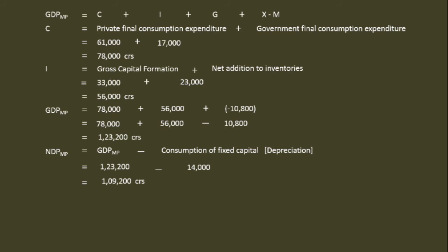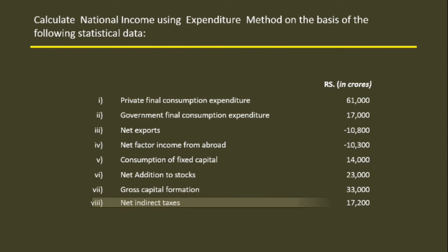The third step is estimation of Net Domestic Product at Factor Cost. Net Domestic Product at Factor Cost equals Net Domestic Product at Market Price minus Net Indirect Tax. Net Domestic Product at Market Price is already calculated as 1,09,200 crores, and Net Indirect Tax is 17,200 crores.